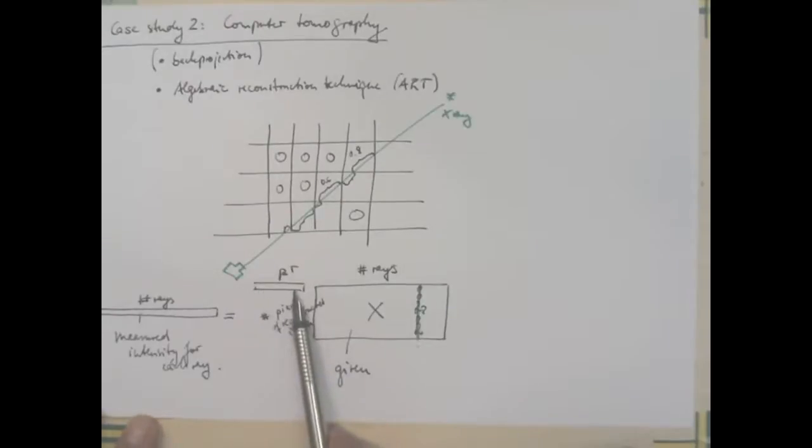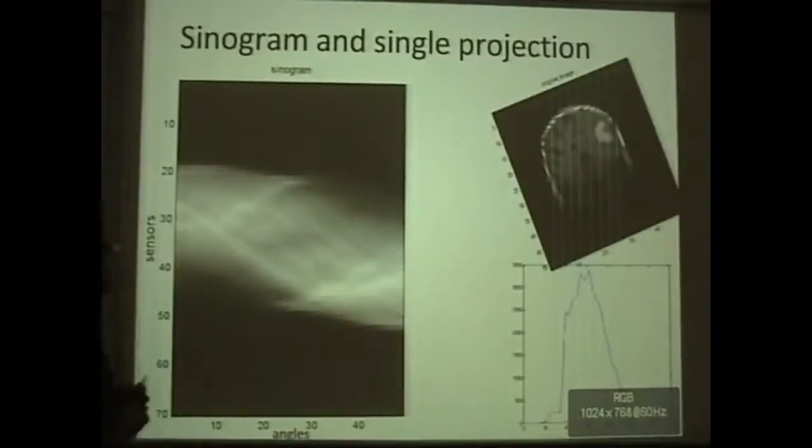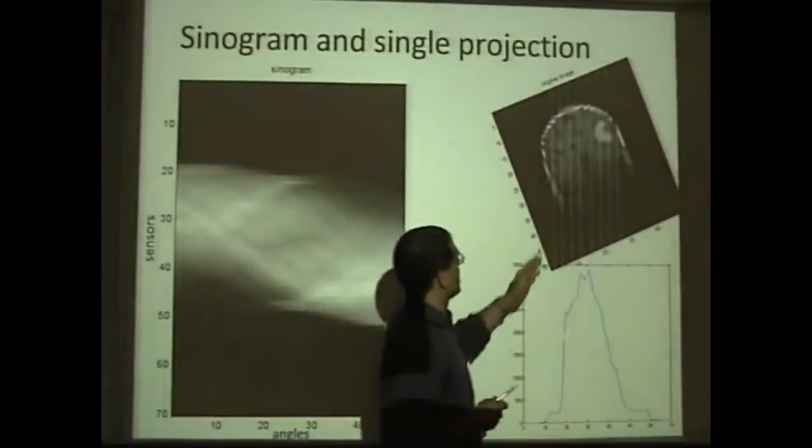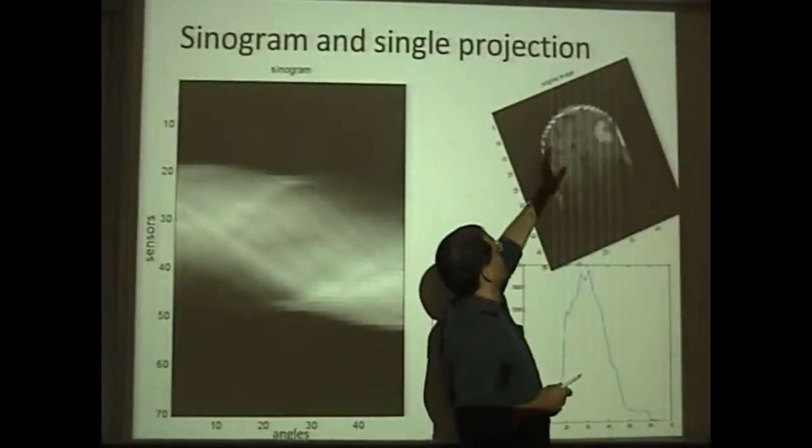So, this is a vector, but I can, by de-vectorizing, I can turn it into an image. This is the image that I'm interested in. So, I have a picture here. Here, for example, you see, let's say, this is the subject.